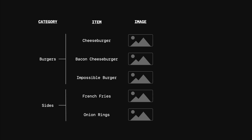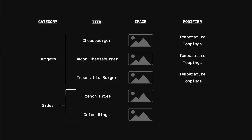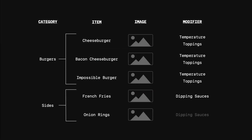Finally, customers are going to want to customize their order to fit their preferences. For that, there's the modifier type. Our burger joint is going to offer customers the ability to choose how they'd like the burger cooked and what toppings they would like. For sides, the restaurant offers a choice of dipping sauces to add — gotta have that garlic aioli. All of these customizations are represented with modifiers.